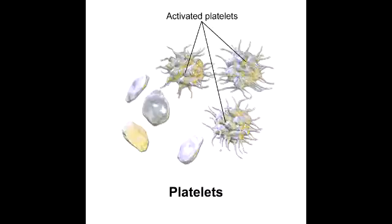Name the two types of granules that are released when platelets are activated. When platelets are activated, they can release dense granules that contain ADP and calcium, as well as alpha granules which contain von Willebrand factor and fibrinogen.